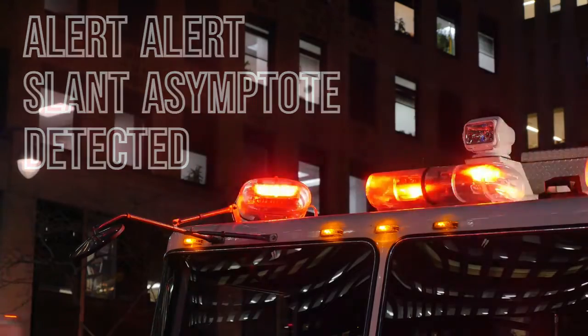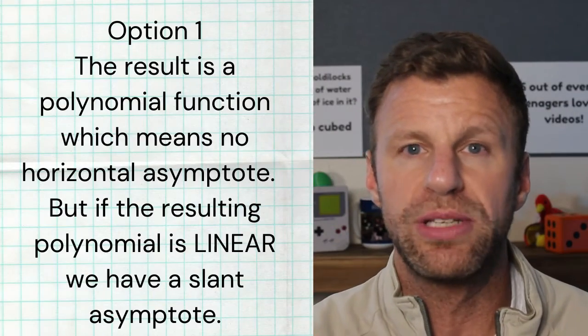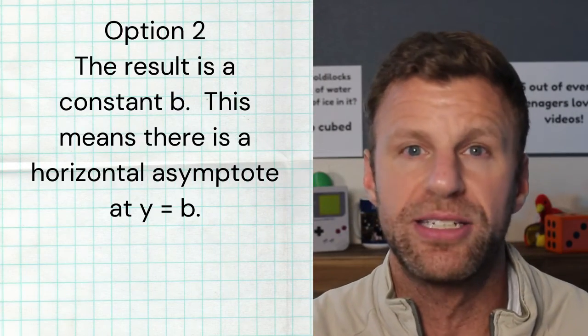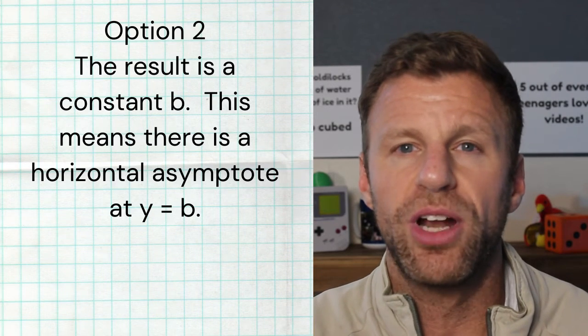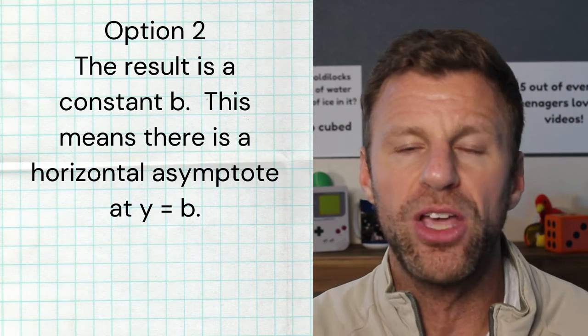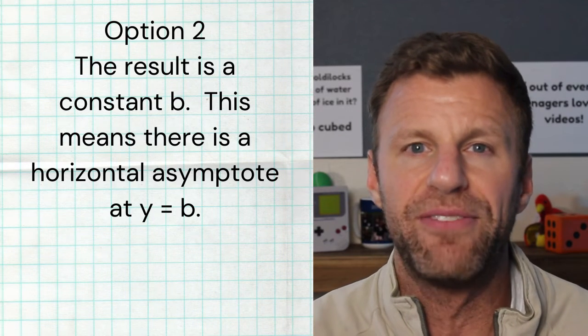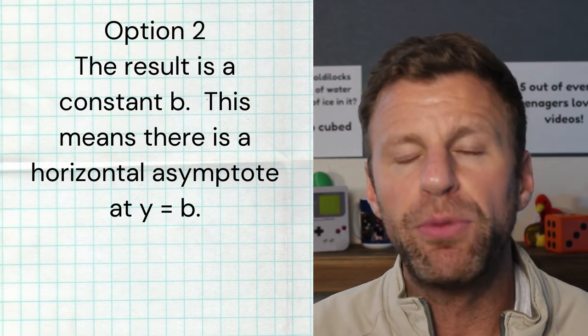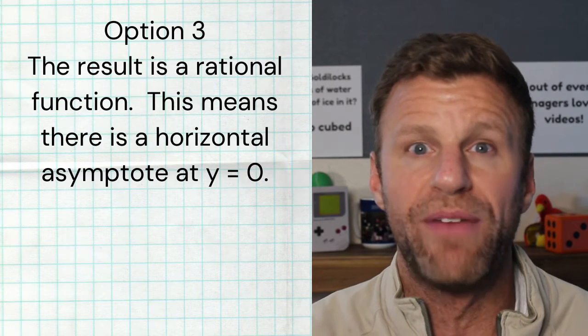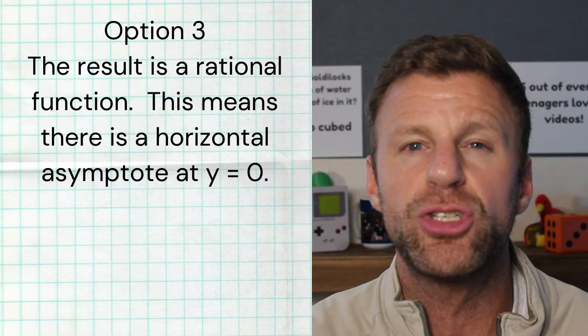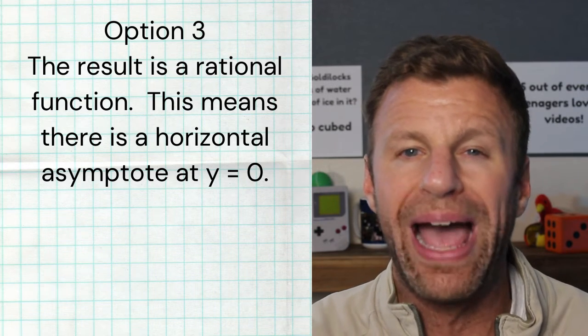The second thing that can happen when you divide your leading terms is that you get a value — a constant, we'll just say b to be generic — but you get a number. That means you have a horizontal asymptote at that specific value, and your end behavior to the left and to the right is that value. The third thing that can happen is you get an x in the denominator, which means you have a rational function. If that's the case, you automatically have a horizontal asymptote at y equals zero.